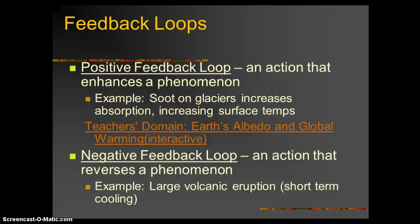A negative feedback loop consists of any actions that will reverse the phenomenon. So if we're talking about global warming as the phenomenon, we're talking about cooling. For example, large volcanic eruptions blocking out the sun leads to cooling — that would be a negative feedback loop for global warming. We're going to talk about more examples in class.